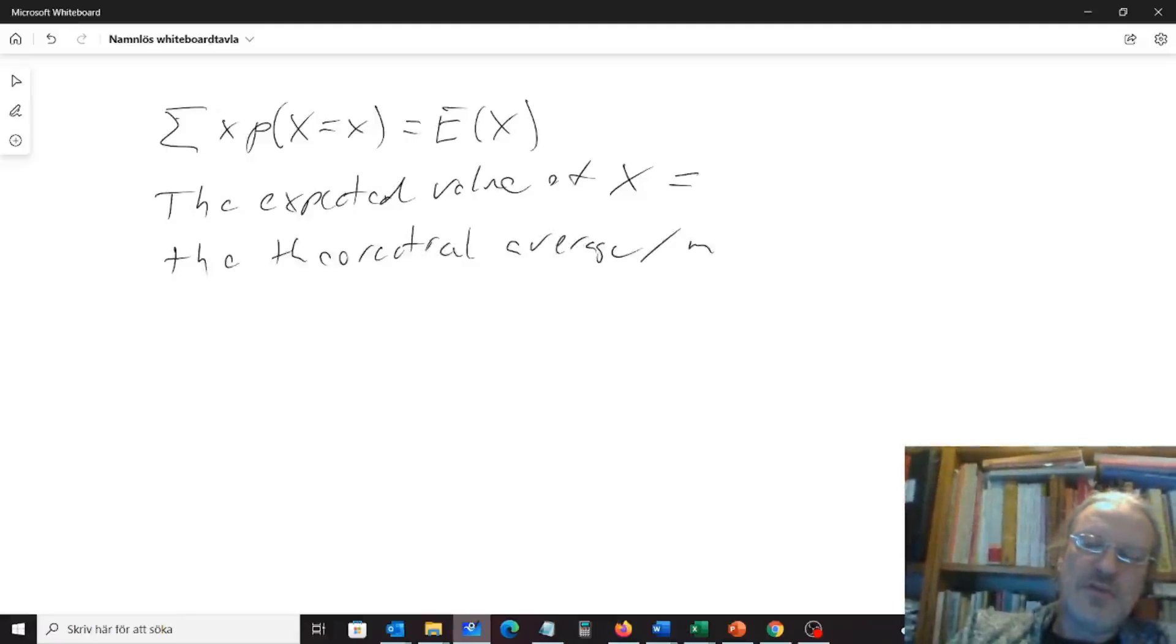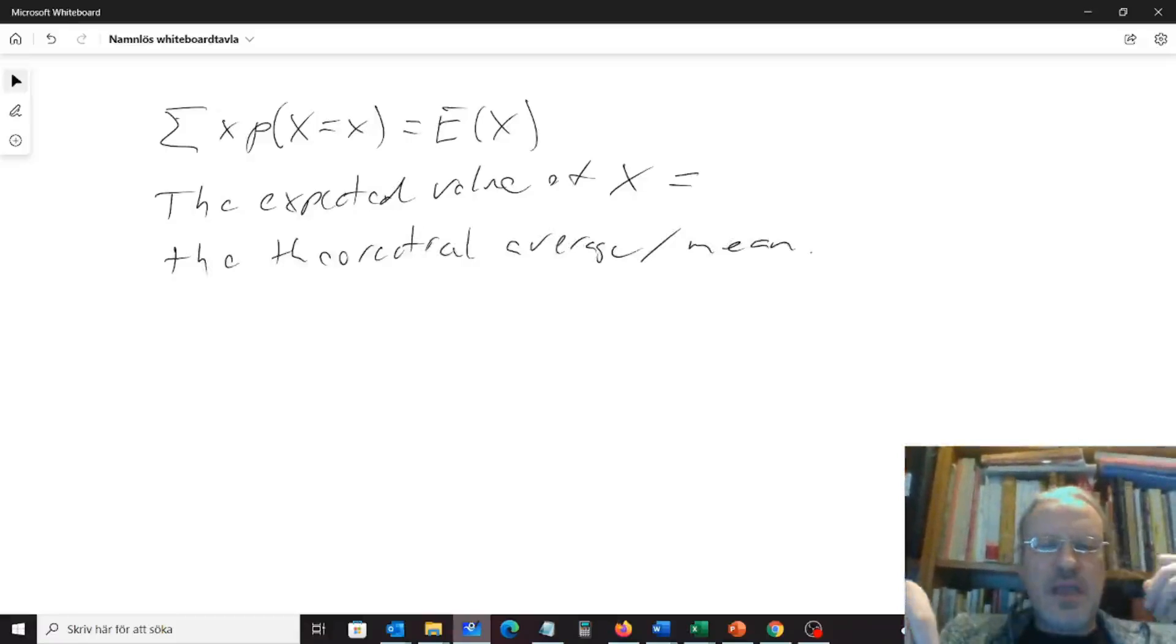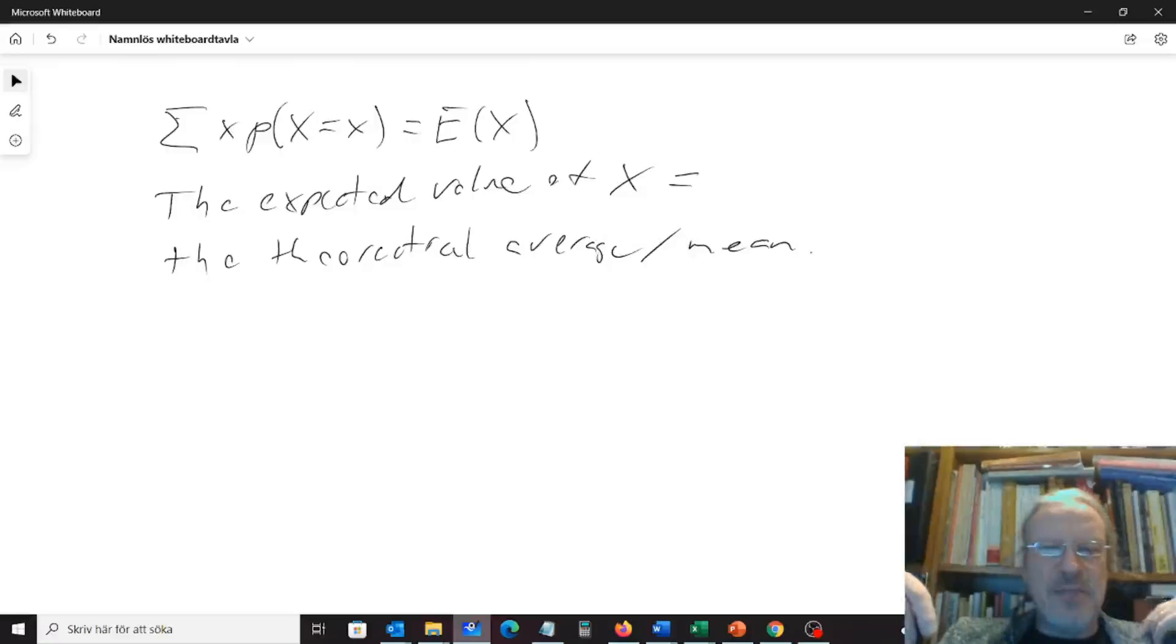You can also use the word mean, and it's actually rather a bad name, because theoretical average is a good name, because it gives the average we should expect if we have a lot of experiments. And expected value sounds like that is the value we expect to get, but it's actually expected average we expect to get. So I would like this to be called expected average, not expected value.